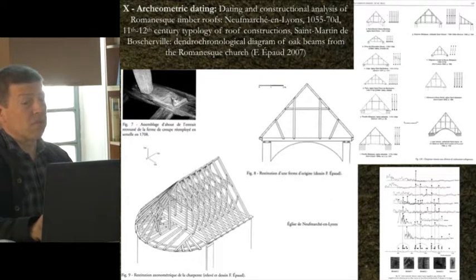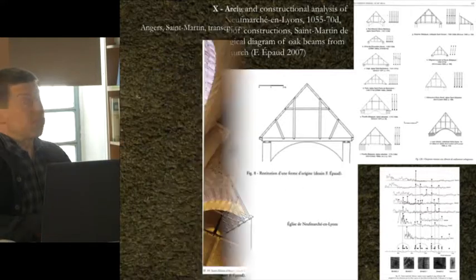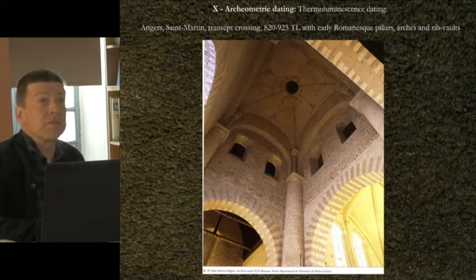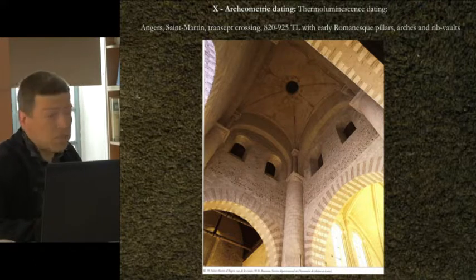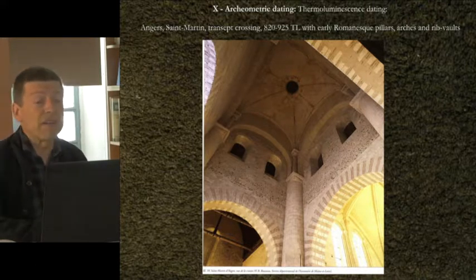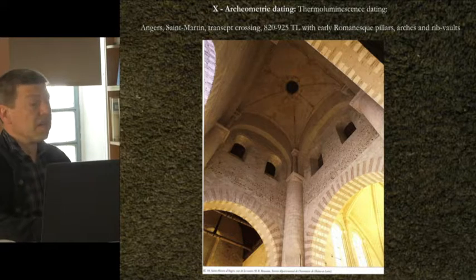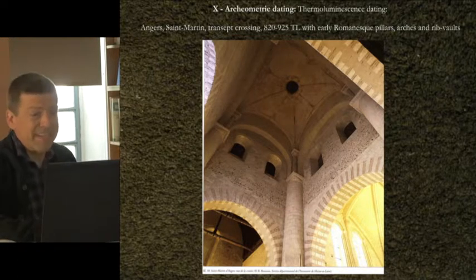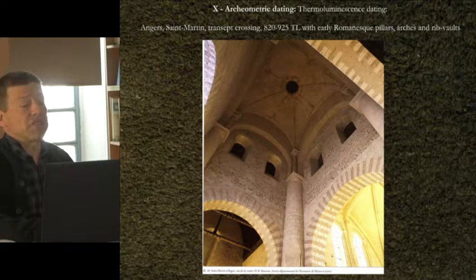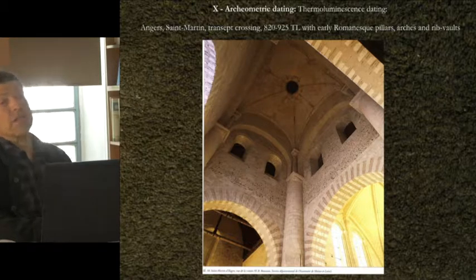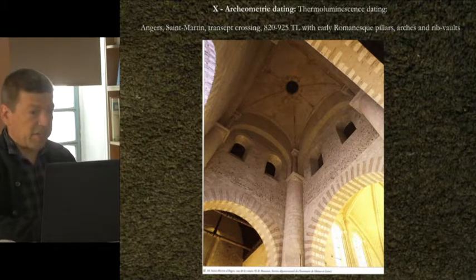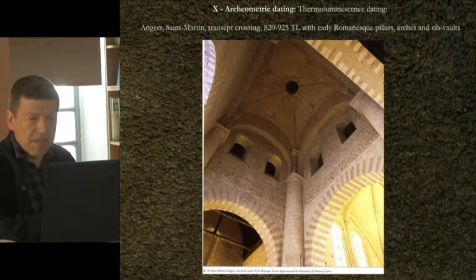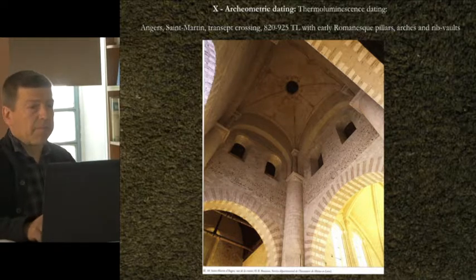Archaeometry: other materials, carbon dating of course, and the dating of ceramic materials — for instance at Angers Saint-Martin this has allowed a complete review of the dating of this church and the establishment of a Carolingian date for the first building stage. Here it is the crossing of the transept, built possibly in the later ninth century.